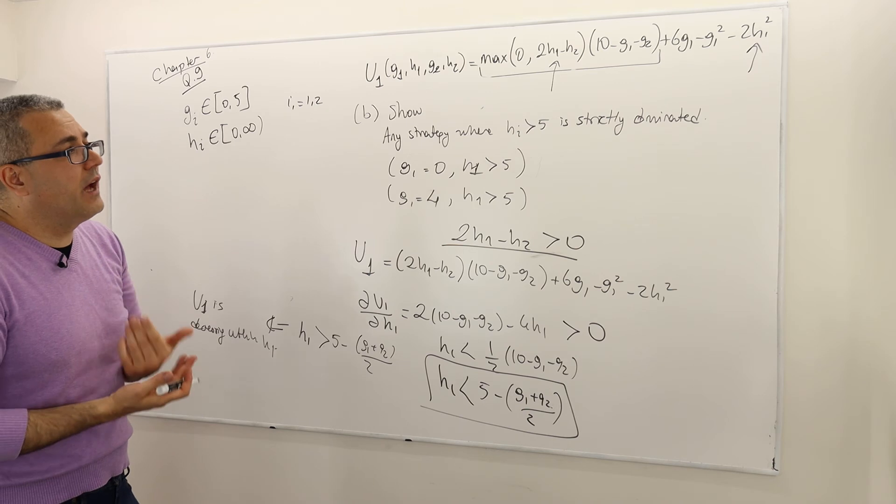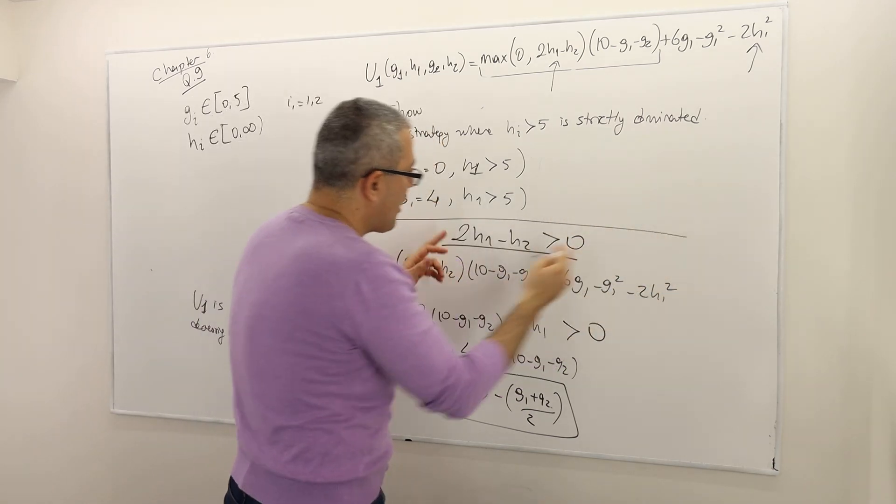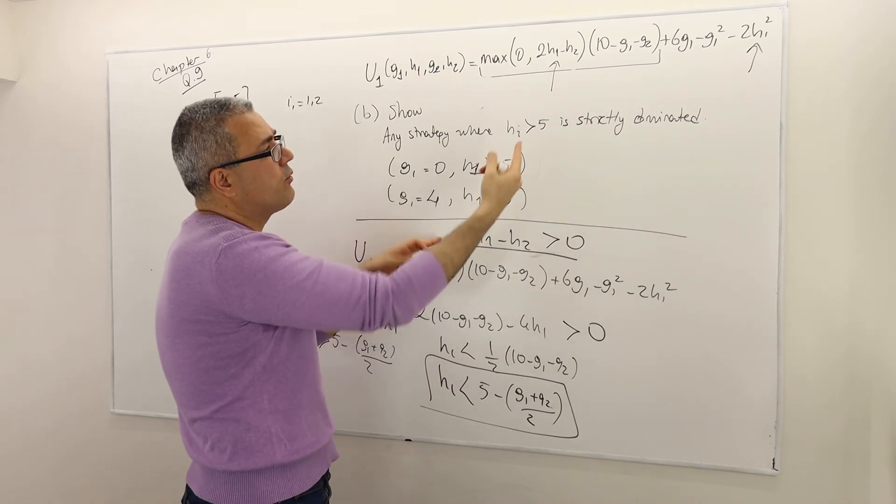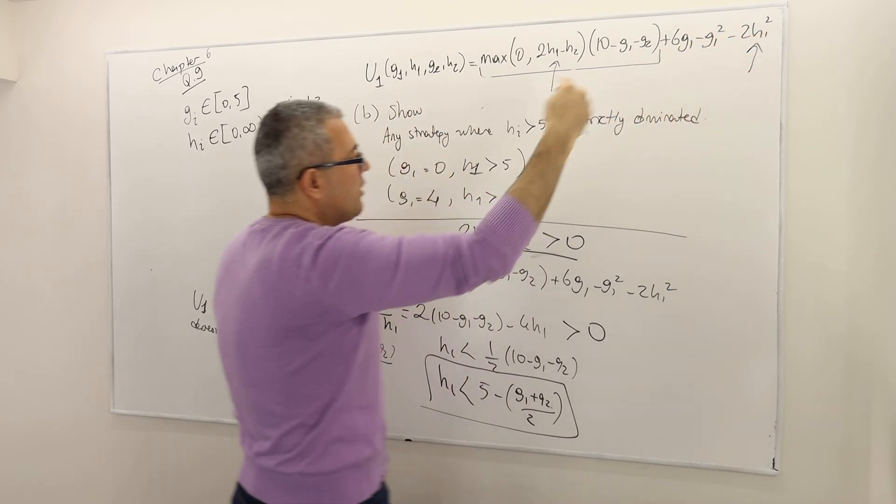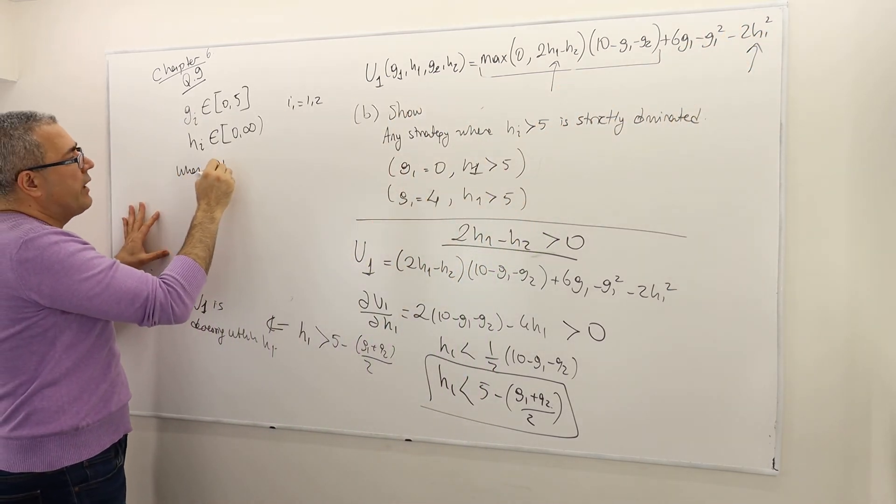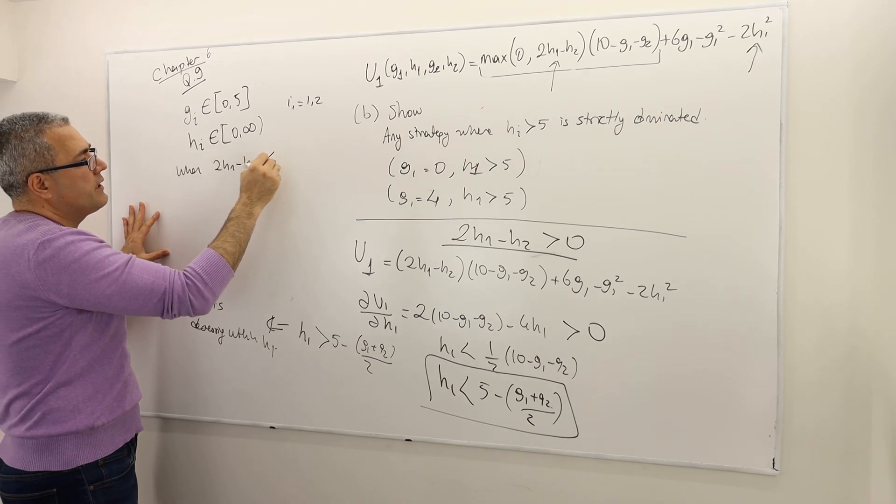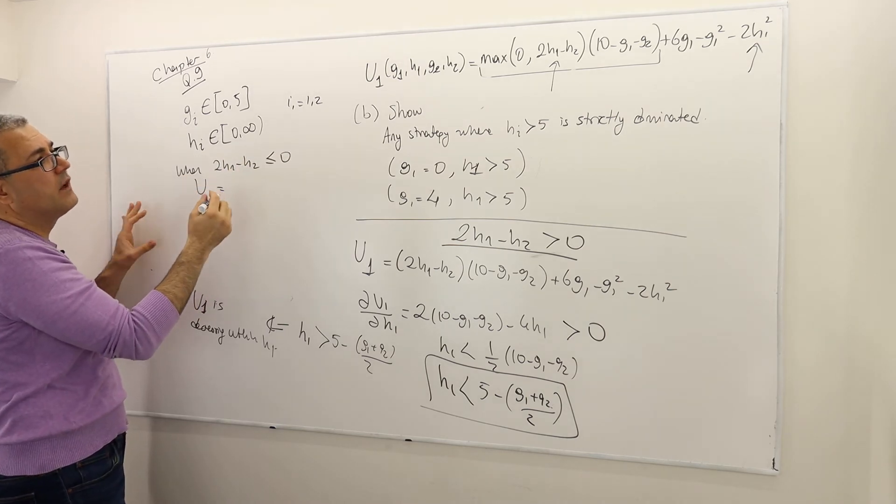So that means the following. Remember, when this term is less than or equal to 0, so this entire payoff function was, so let me summarize it. When 2H1 minus H2 is less than or equal to 0, the entire payoff function is nothing but, you know, some term, which doesn't depend on G.